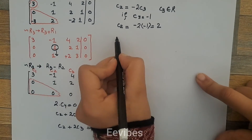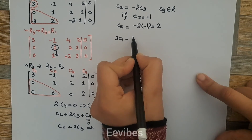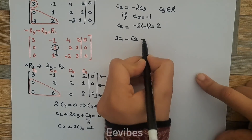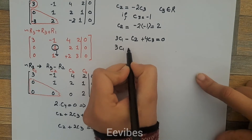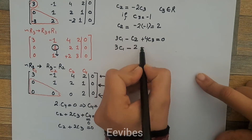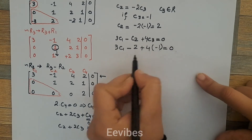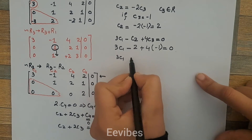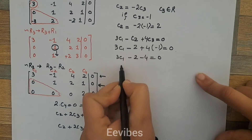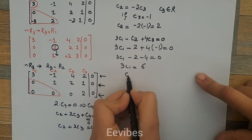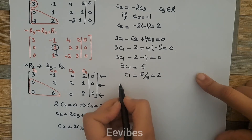From the first equation: 3c1 - c2 + 4c3 = 0. Substituting c2 = 2 and c3 = -1: 3c1 - 2 + 4*(-1) = 0, which simplifies to 3c1 - 2 - 4 = 0, so 3c1 = 6, giving c1 = 2.